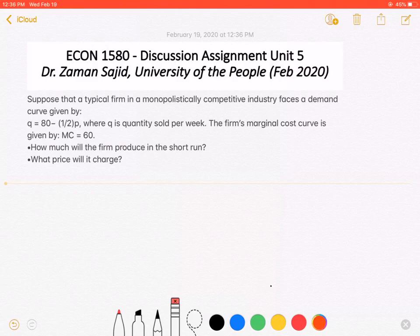So it says that, suppose a typical firm in a monopolistically competitive industry faces a demand curve given by Q = 80 - ½P, where Q is the quantity sold per week. The firm's marginal cost curve is given by MC = 60. How much will the firm produce in the short run? And what price will it charge?